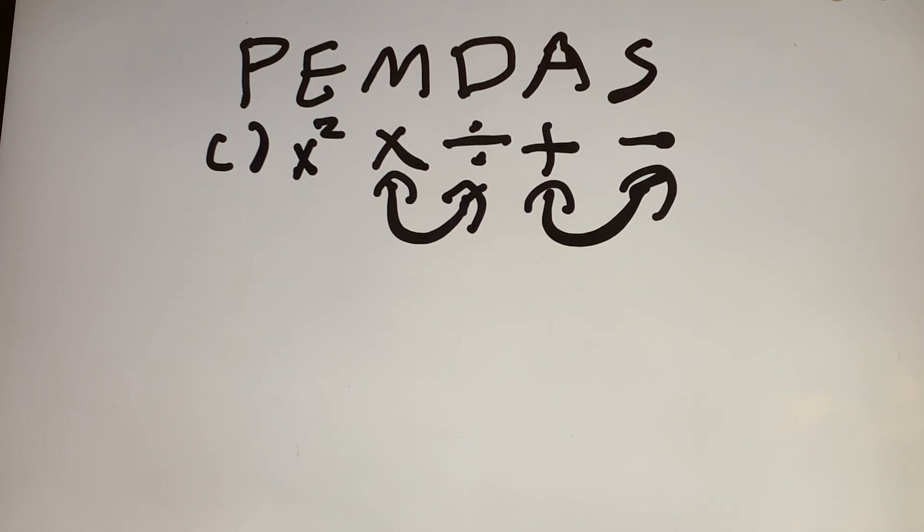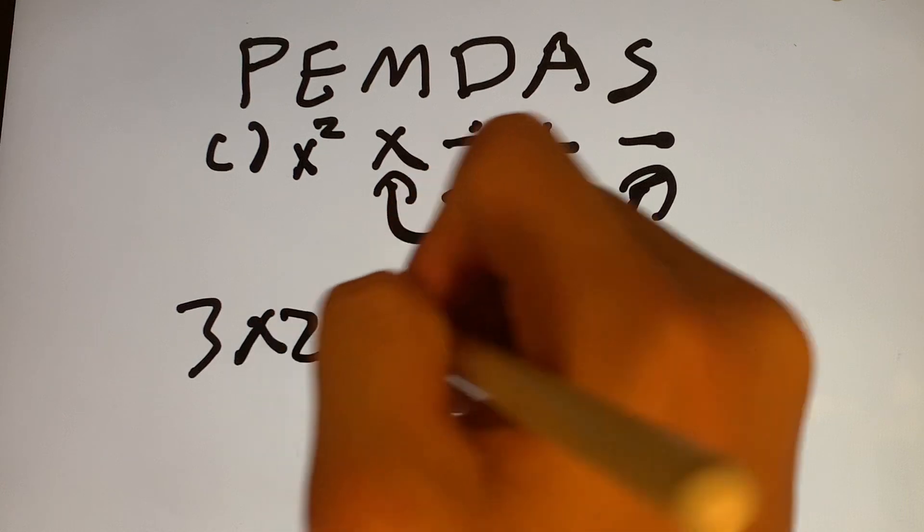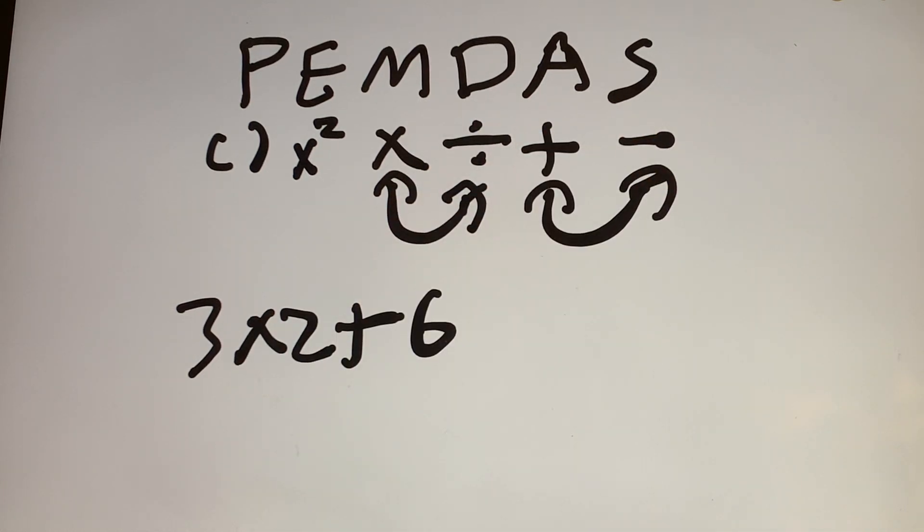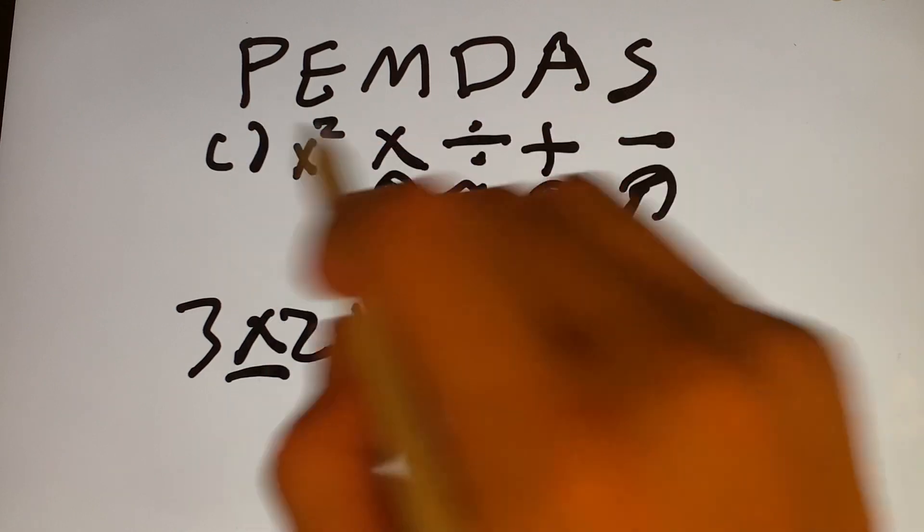So let's just say we have the problem, right? 3 times 2 plus 6. This is pretty simple. Most of you guys with a fifth grade education should be able to solve this. First thing you're going to do is you see what's first. So it's multiplication first or addition. Looking at PEMDAS,